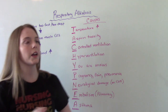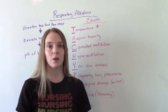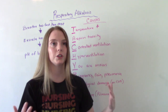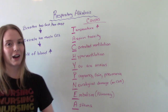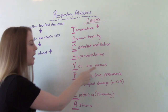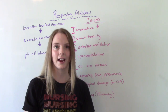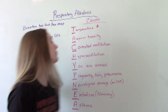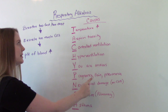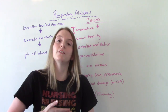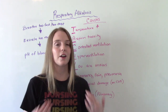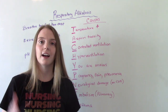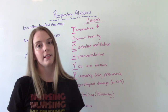C is for controlled ventilation — think about patients who are on ventilators. We have to control those settings, and sometimes those can hyperventilate the patient, which can cause respiratory alkalosis. H is for hyperventilation when you are anxious — think about a patient having a panic attack; they start hyperventilating. P covers a couple: pregnancy, because the normal physiological changes and displacement of the diaphragm can cause hyperventilation; pain, because people in pain tend to have increased respirations.